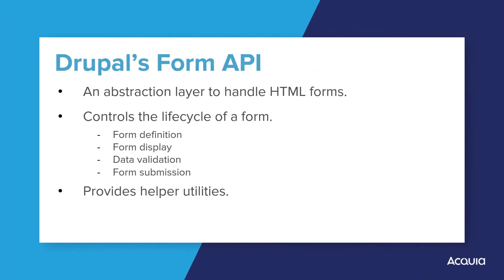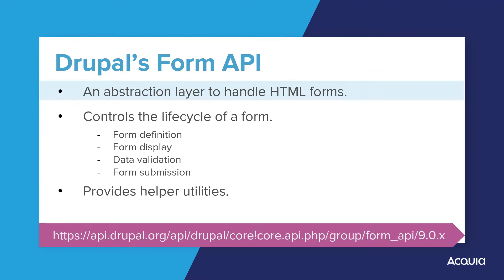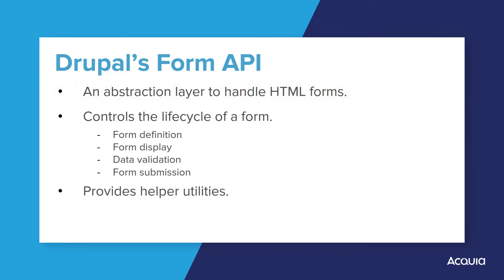The Drupal Form API provides a framework for building forms in Drupal. It's an abstraction layer around standard HTML forms and their handling. The purpose of Drupal Form API is to achieve consistency in form processing and presentation, while reducing the amount of HTML that must be explicitly generated by a module. The API controls the lifecycle of a form, including form definition, form display, data validation, and form submission.